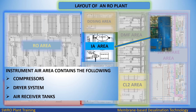Instrument air area contains the following: compressors (duty and standby), dryer system, and air receiver tanks.